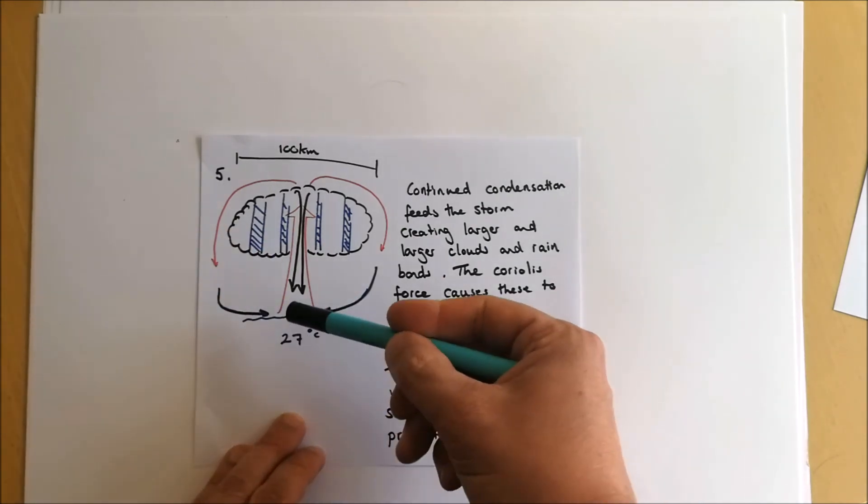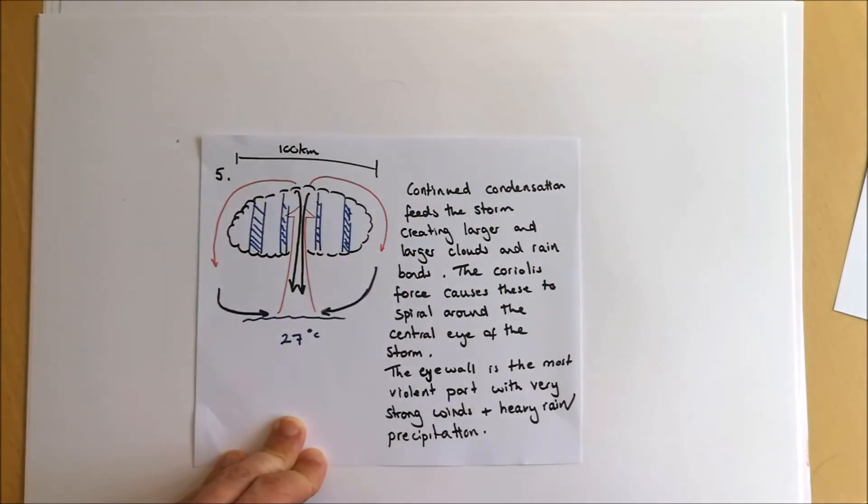Either side of that eye is the eye wall. This is the most violent part of the storm with very strong winds and very heavy rainfall or precipitation occurring in the eyewall.